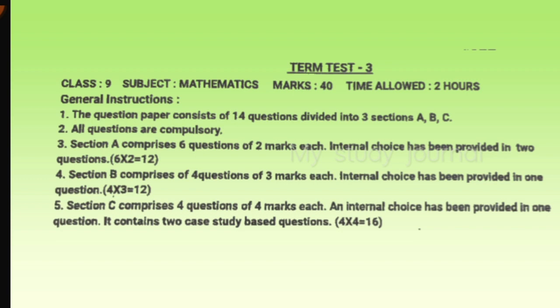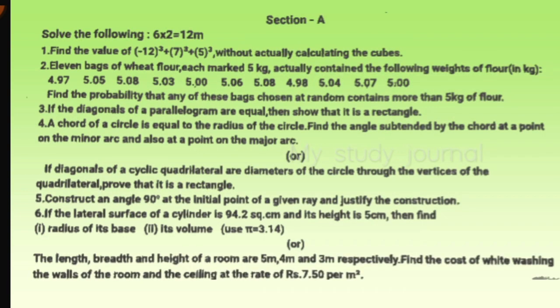Coming to general instructions, the paper is of 40 marks with 2 hours time allotted. We have three sections: Section A is of six questions, two marks each; Section B is four questions, three marks each; Section C is four questions, four marks each. We have internal choices available in every section.